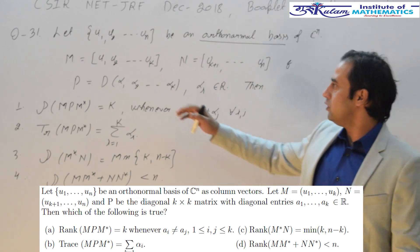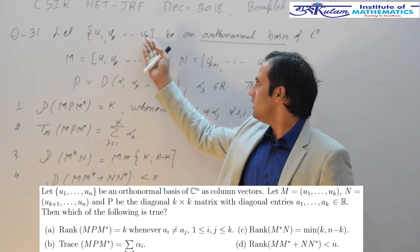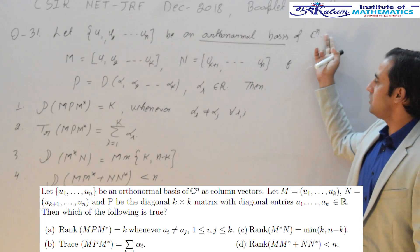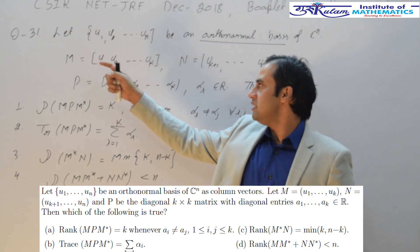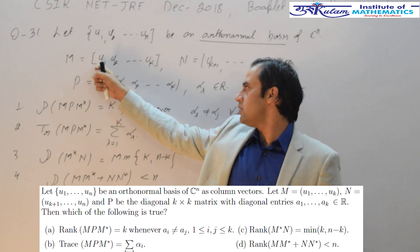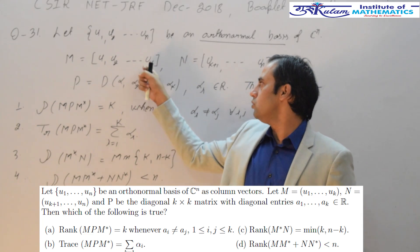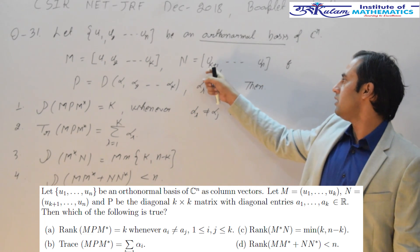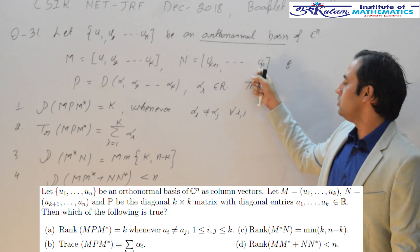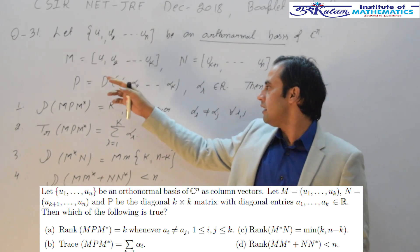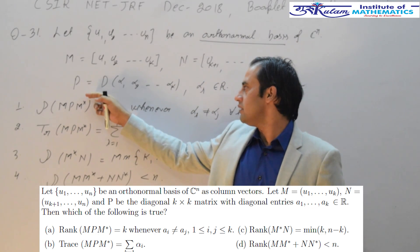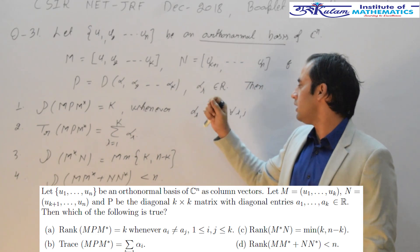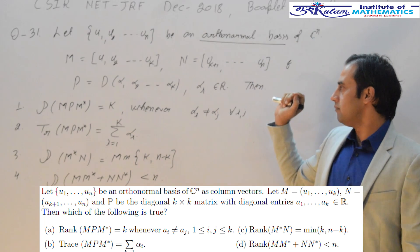The question states: let U1, U2, ..., UN be a set of orthonormal basis of C^N. M is the matrix whose columns are U1, U2, ..., UK+1 up to UN, and P is a diagonal matrix whose diagonal entries are alpha 1, alpha 2, ..., alpha N, where alpha are real numbers.